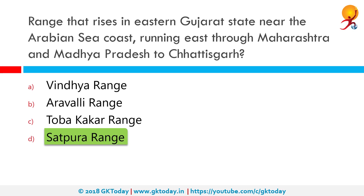The Narmada river originates from the northeastern end of Satpura and runs in the depression between the Satpura and Vindhya ranges. The Tapti river originates from the eastern central part of Satpura, crosses the range in the center, and further runs along the southern slopes of the range towards the west, meeting the Arabian Sea at Surat.